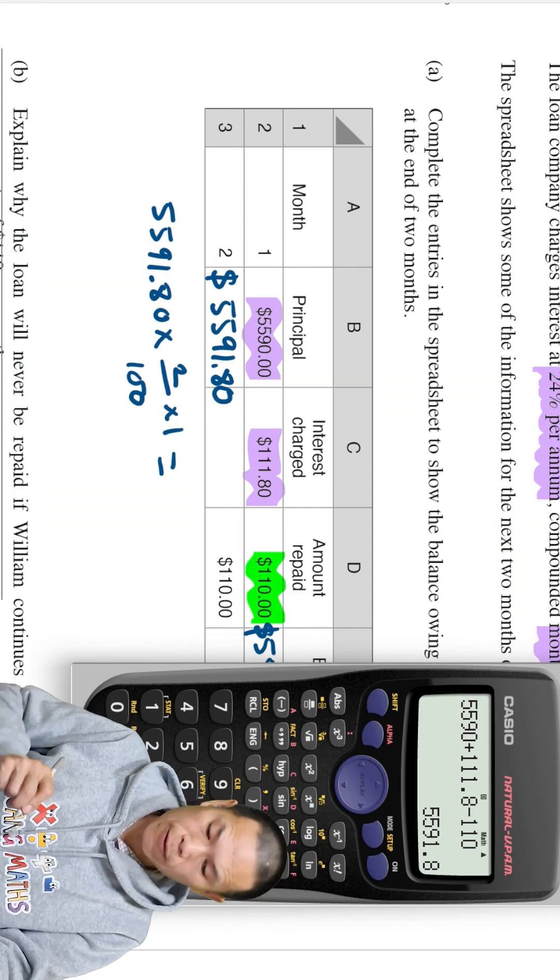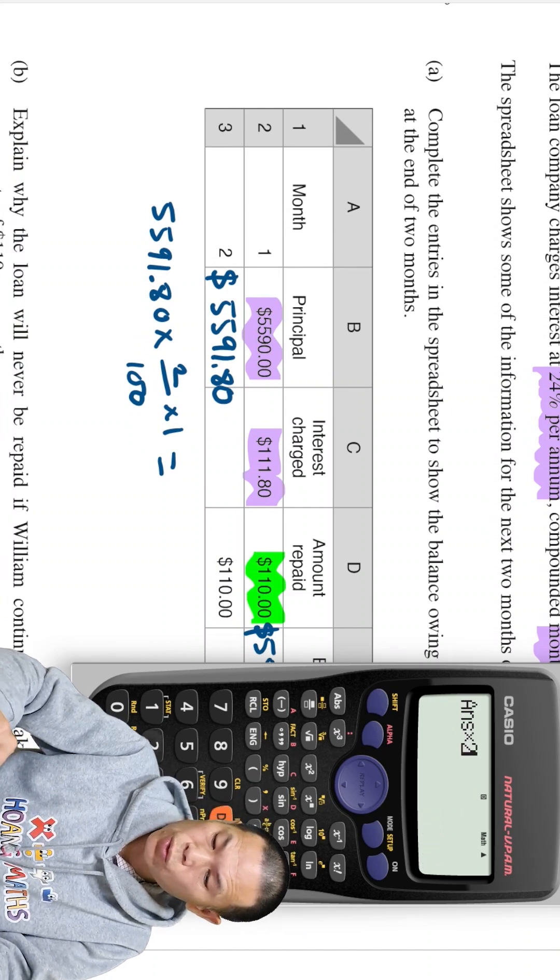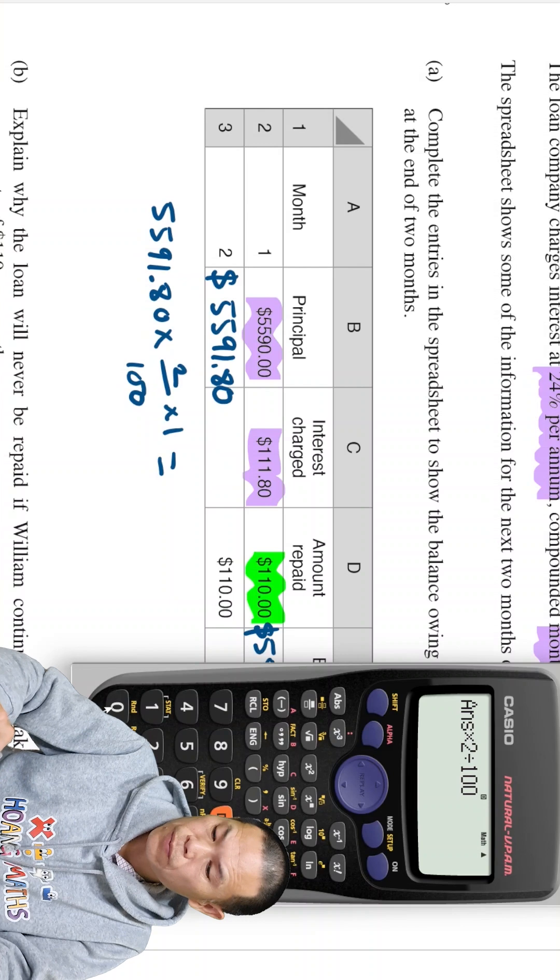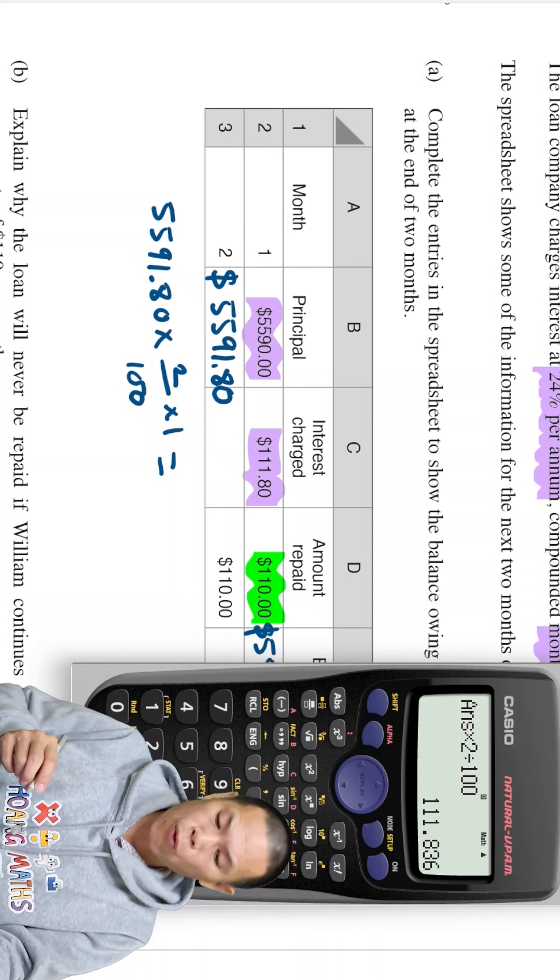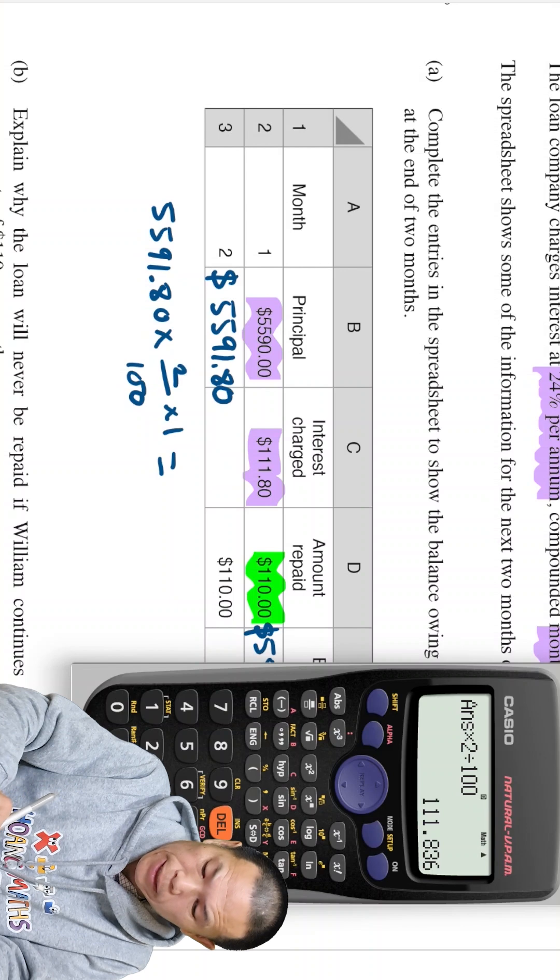So let me just put on a calculator. Answer times 2 divided by 100. That will do. So $111.84, correct to two decimal places.